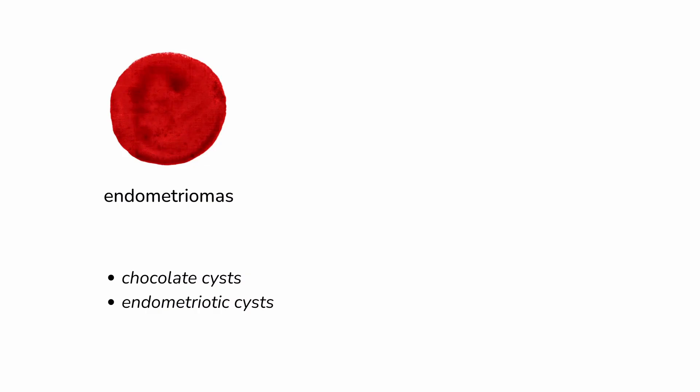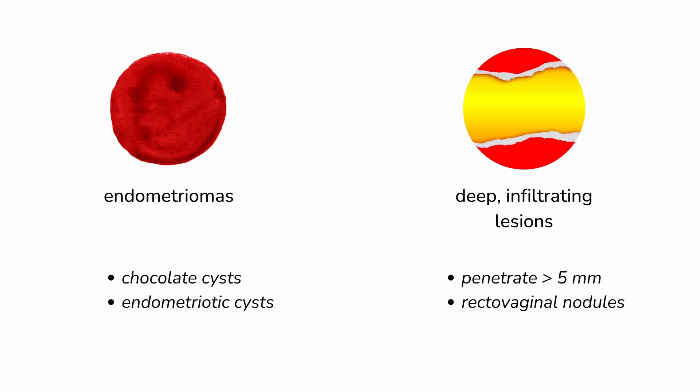Endometriomas, also called chocolate cysts or endometriotic cysts, are endometriosis lesions that form on the ovaries. Deep infiltrating lesions are invasive lesions that penetrate more than five millimeters into tissue, and they also include rectovaginal nodules, which form in the space between the vagina and the rectum.